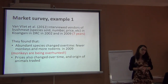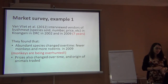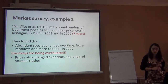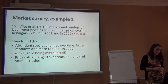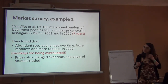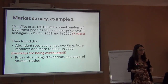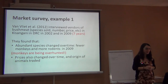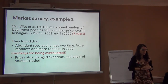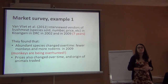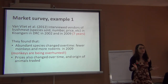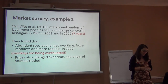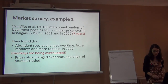Now we move to another approach: studying what people are trading in cities and the prices. This is a study done in Kisangani in the DRC by Fargeot and colleagues, who did surveys in the market checking what people are selling, seven years apart. They found that fewer monkeys were in the market in 2009 compared with 2002 — most likely because they had been overhunted — and the prices and origin of the animals also changed over time.